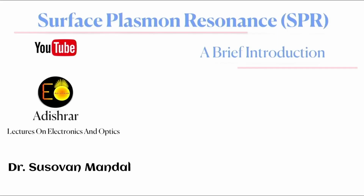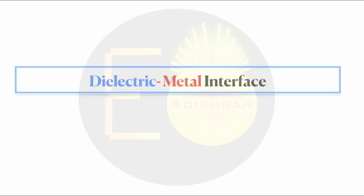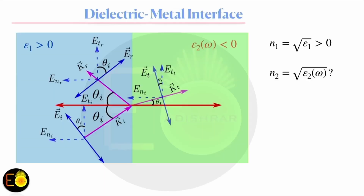Welcome to Arista. Previously, I was discussing Surface Plasmon Resonance and I started my discussion with a very simple example of a dielectric-dielectric interface. At the end of my last lecture, I raised a question: what will happen if I replace one of the dielectric materials with a metal?